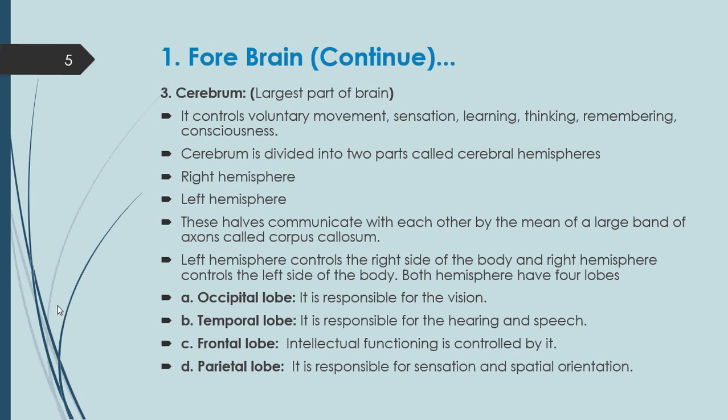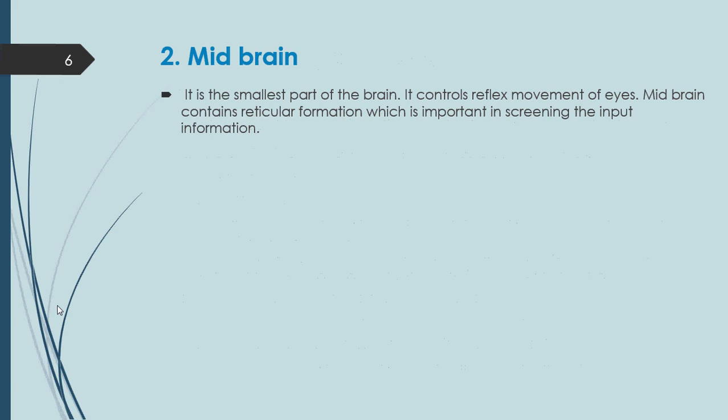Now let's discuss midbrain — number two of the three main parts. Midbrain is the smallest part of the brain. It controls reflex movement of the eyes. Midbrain also contains the reticular formation, which is important in screening the input information — it filters incoming sensory input.